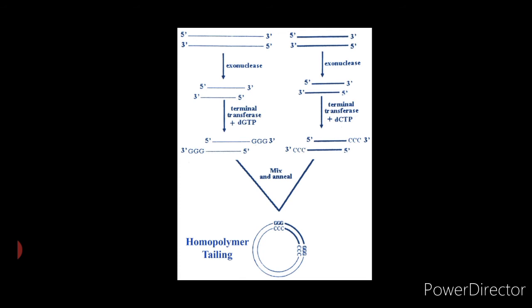The cloned sequence can be retrieved using PST1 restriction enzyme. This method rules out the chances of re-annealing of the two alternative ends of the same DNA molecule or of two similar DNA molecules. In 1972, Jackson and his colleagues were among the first to apply the homopolymer method, where they constructed a recombinant in which a fragment of lambda phage DNA was inserted into SV40 DNA.